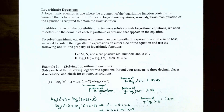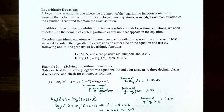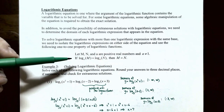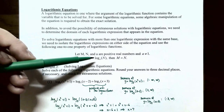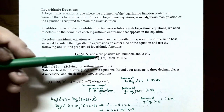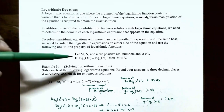To solve logarithmic equations with more than one logarithmic expression of the same base, isolate the logarithmic expression on either side and use the one-to-one property. Let m, n, and a be positive real numbers where a ≠ 1 (the base). If log base a of m equals log base a of n, then the arguments m and n must be equal, since the bases are the same.